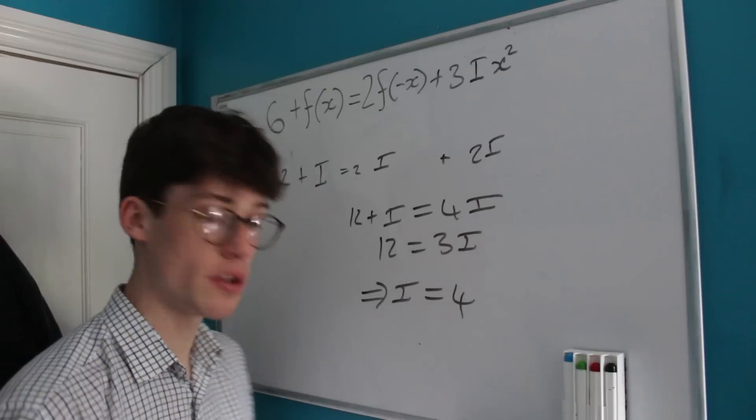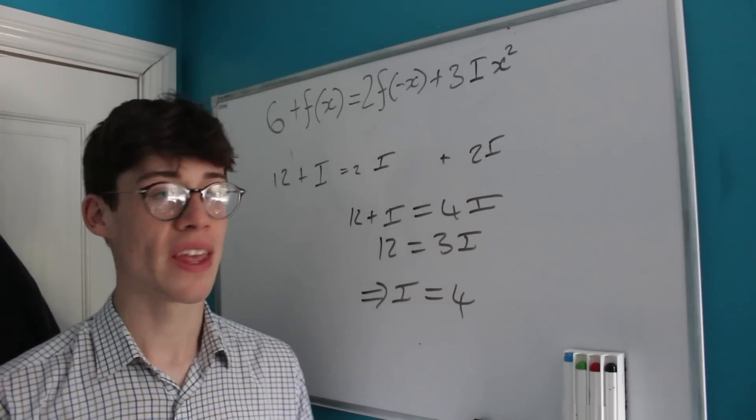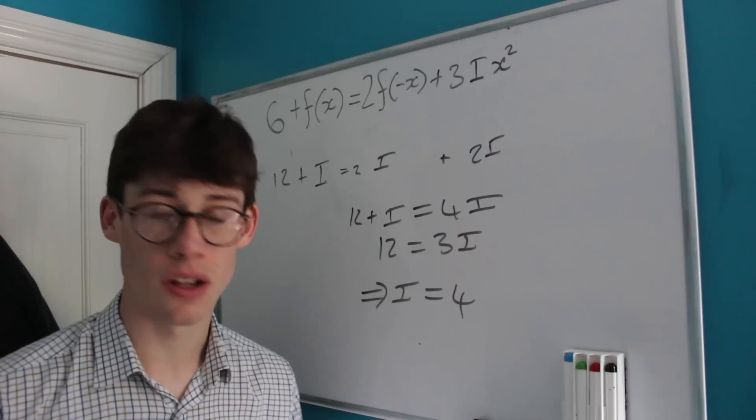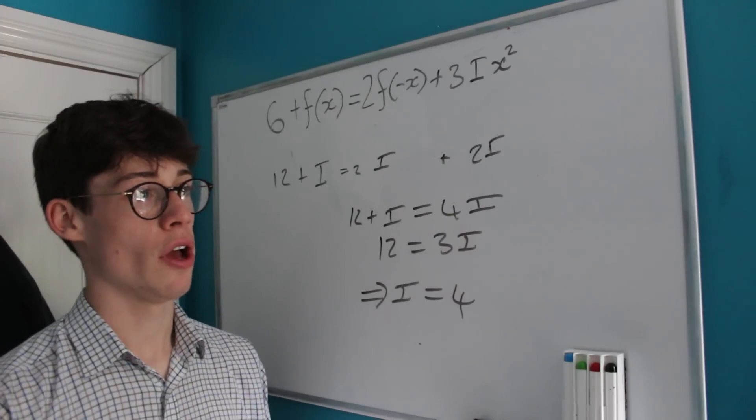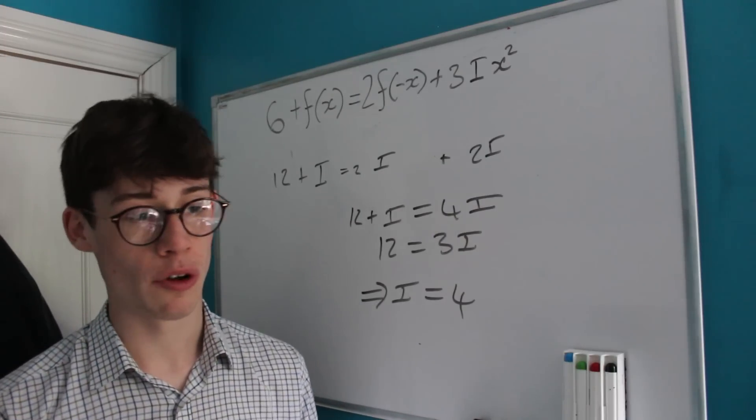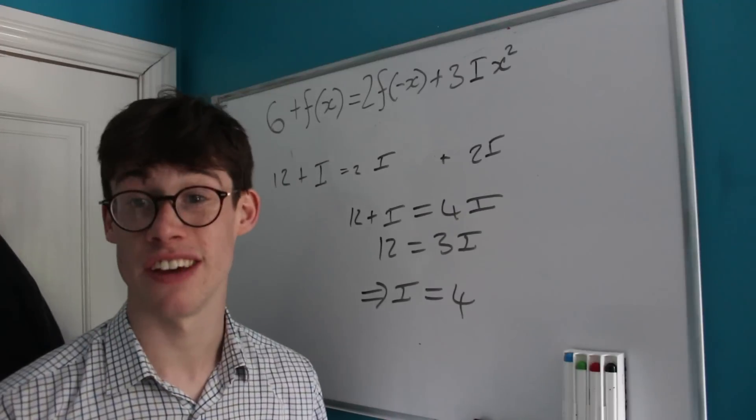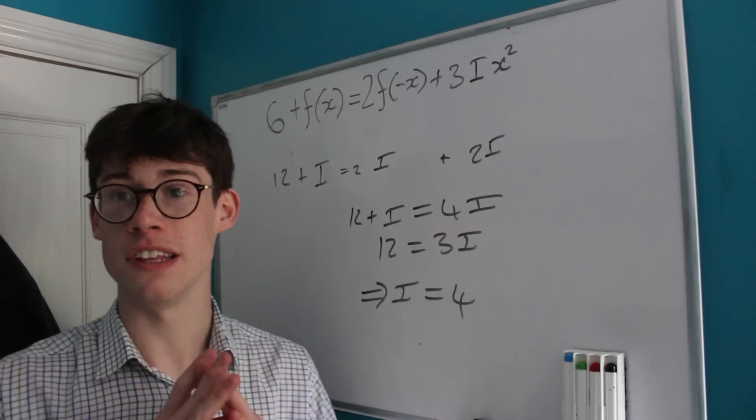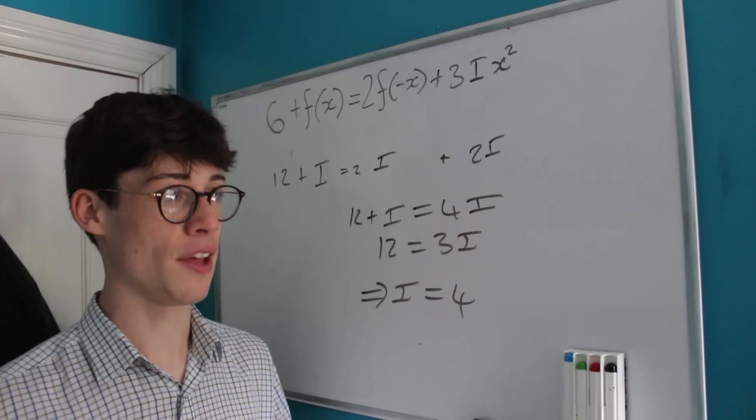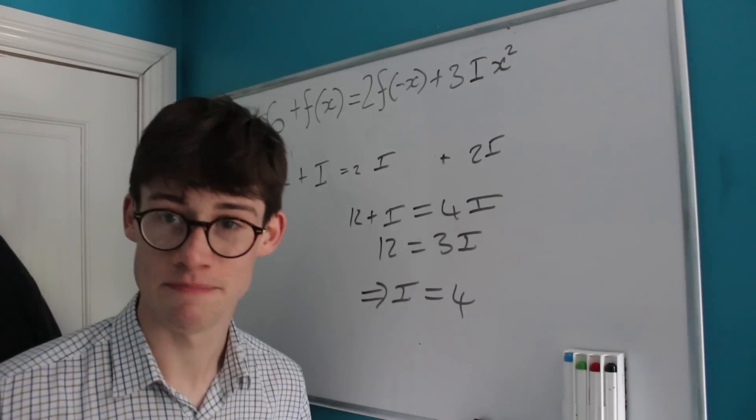I hope you guys have enjoyed this video. It's a bit of a shorter one this time, I just wanted to do a quick problem. As a challenge in the comments, can you find all possible forms or all possible ways that the function f(x) could be written and prove that these are the only ways that it could exist? Thanks for watching, and I'll see you next time. Bye!